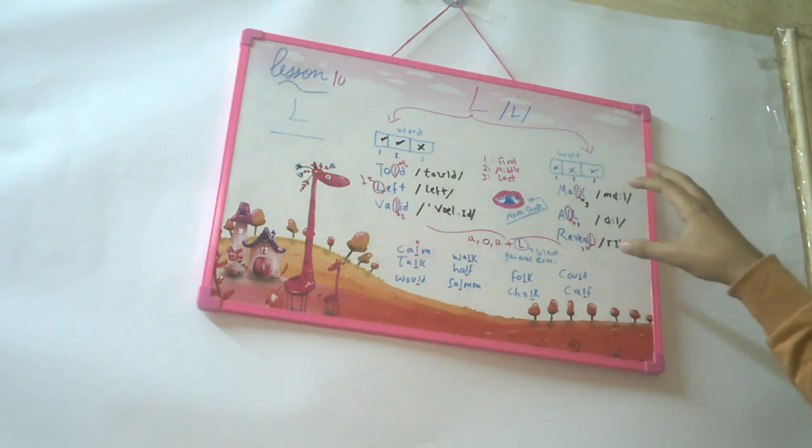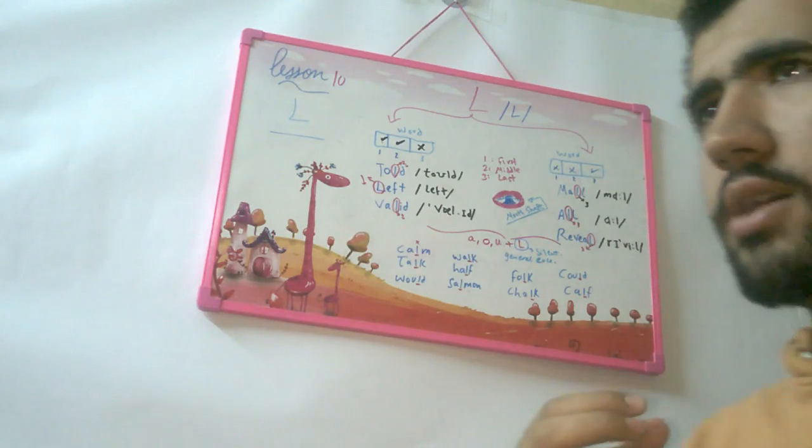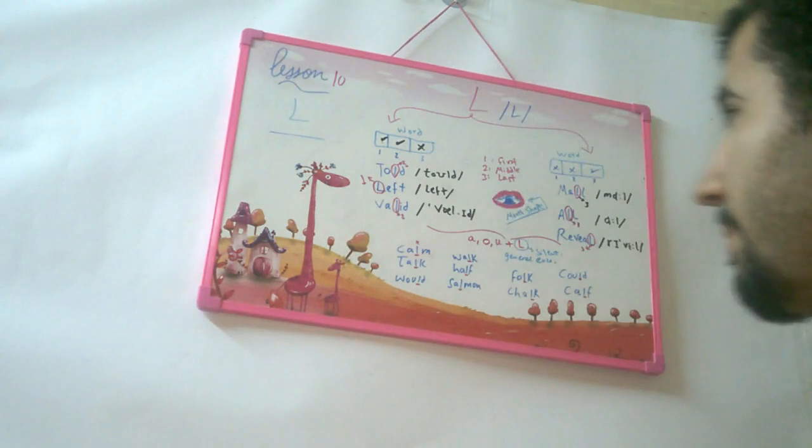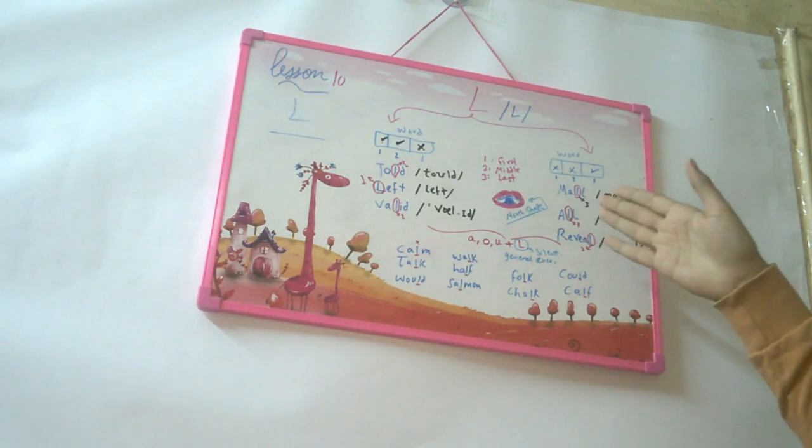And when it comes at the end of the word, it has this sound of O-L, O-L, not L, O-L. Okay? Like mall, all, and reveal.